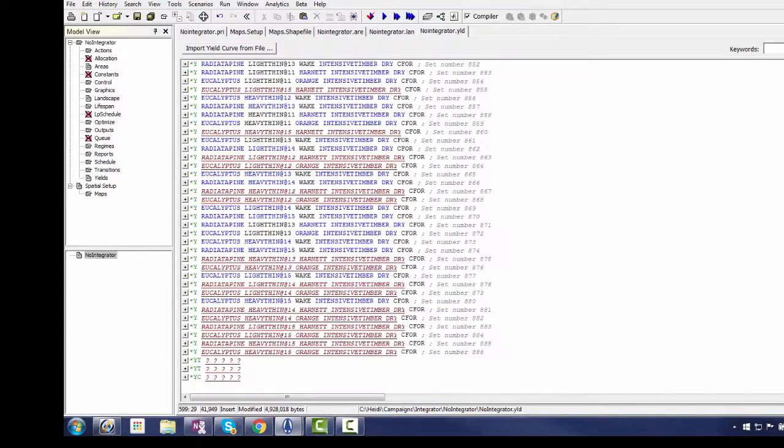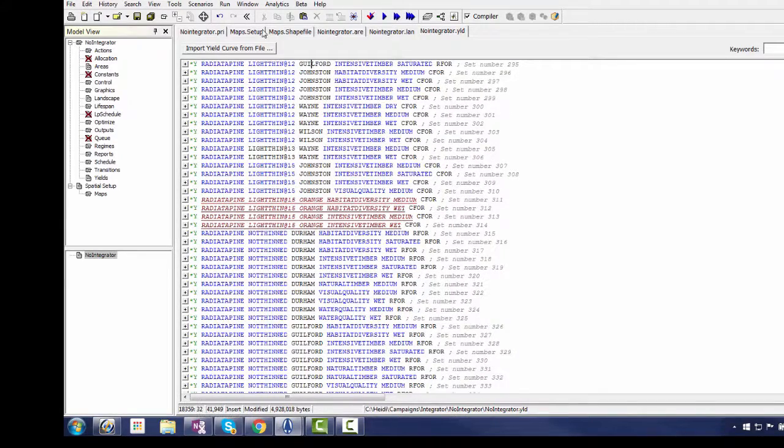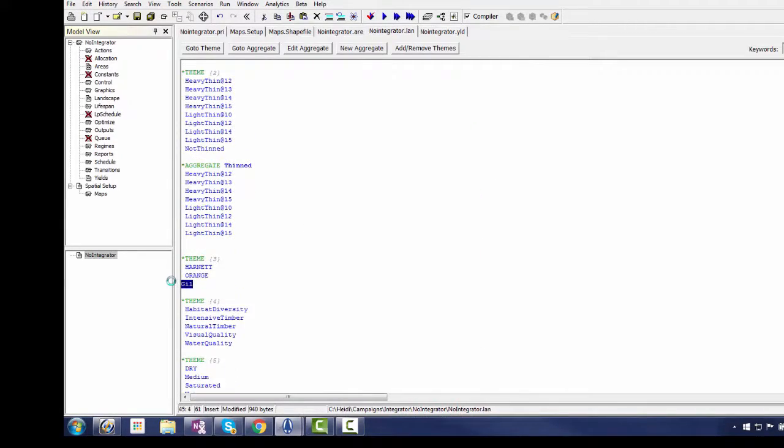Hugo still needs to build theme-based outputs for the new management districts, then run and solve the model, finishing with creating new output graphics for the two new management districts. We're not going to show you that because the whole process takes over 10 minutes.